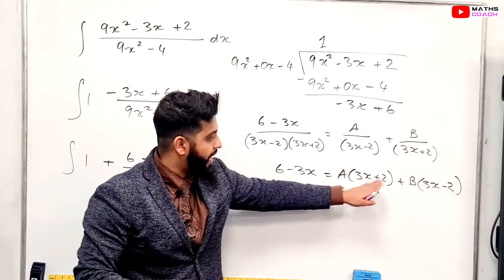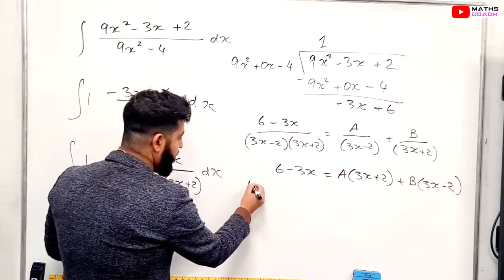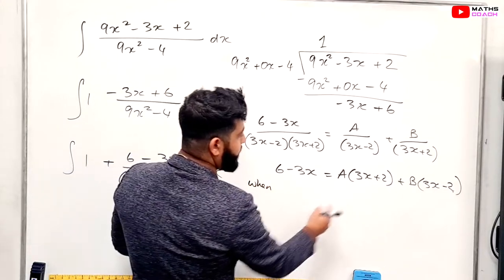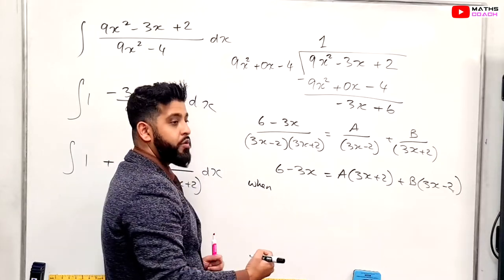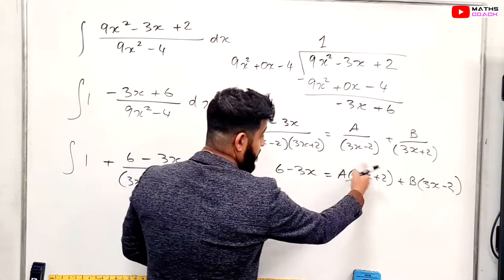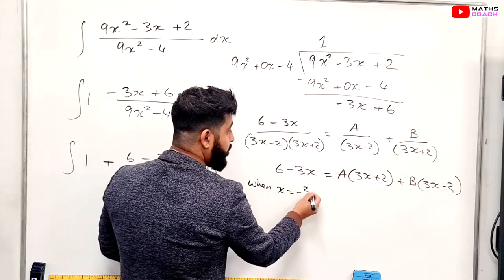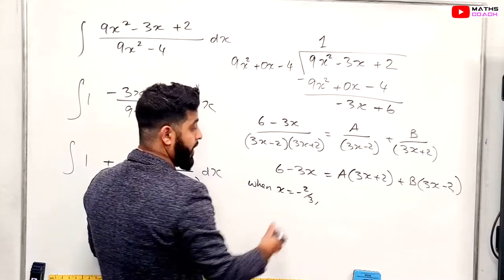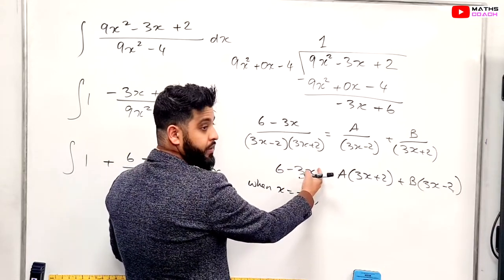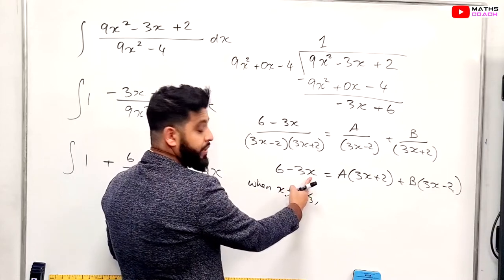We're going to substitute our values of x to eliminate each one each time. So if you could help me with that, please. So when, let's start with getting rid of the x here. So when x equals what? We want to make a 0 here. So when x equals minus 2 over 3, can you tell me what I get here, please? I get 8 here. So when x equals minus 2 over 3, what do I get on this side? 8.